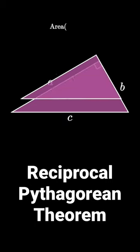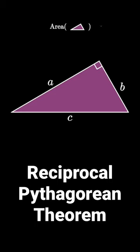The area of this triangle is equal to 1 half A times B, but it's also equal to 1 half C times H, where H is an altitude that's drawn perpendicular to the hypotenuse C.